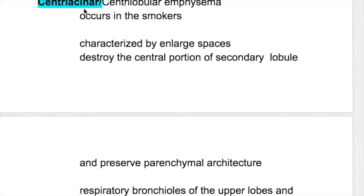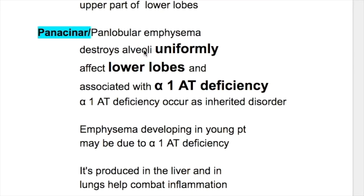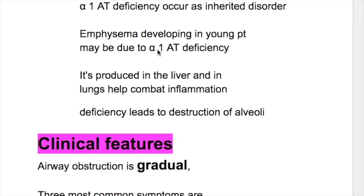Types of emphysema: number one, centrilobular (centriacinar), and number two, panacinar (panlobular). Centrilobular emphysema occurs in smokers and is characterized by enlarged spaces that destroy the central portion of the secondary lobule, affecting the respiratory bronchioles of the upper lobe and upper part of the lower lobe. Panacinar emphysema destroys alveoli uniformly and affects the lower lobe. It is associated with alpha-1 antitrypsin deficiency, which is an inherited disorder. Emphysema developing in a young patient may be due to alpha-1 antitrypsin deficiency; it is produced in the liver and lungs and helps combat inflammation.